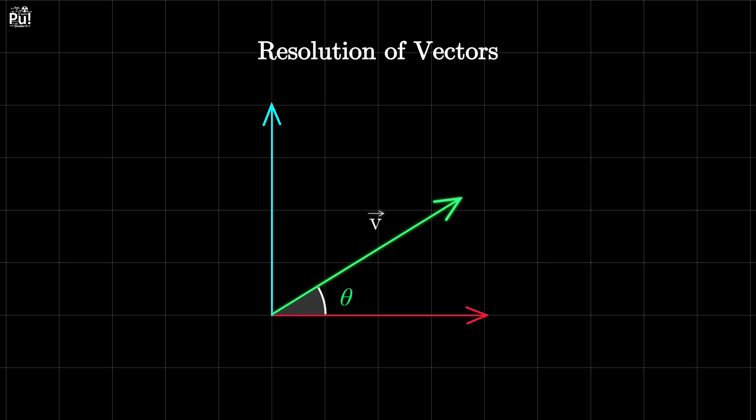The velocity at launch can be split into two components, one along the horizontal axis, one along the vertical axis. We do this using basic trigonometry.